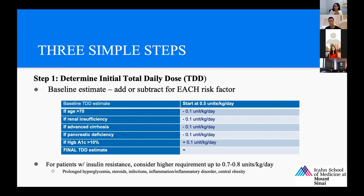Instances where we actually increase the dose: an HbA1c greater than 10% is a clear marker of uncontrolled diabetes. For patients with signs of insulin resistance, you can consider high requirements up to 0.7 or 0.8 units per kilogram per day. This includes prolonged hyperglycemia not responsive to doses given, steroid use which increases glucose, infections, inflammatory disorders, and central obesity with signs like acanthosis nigricans. Bottom line: a lot of this is centered around avoiding hypoglycemia as well as treating hyperglycemia.